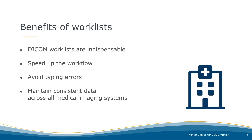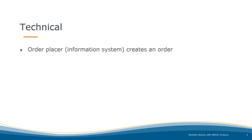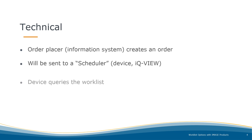How can this be realized? An order placer, like an information system, creates an order and sends it to a scheduler, which can be a device such as a sonography or x-ray unit. As soon as the device receives the order, it queries the worklist and thus accepts the order. In this sense, IQView can work as a device and query a worklist.